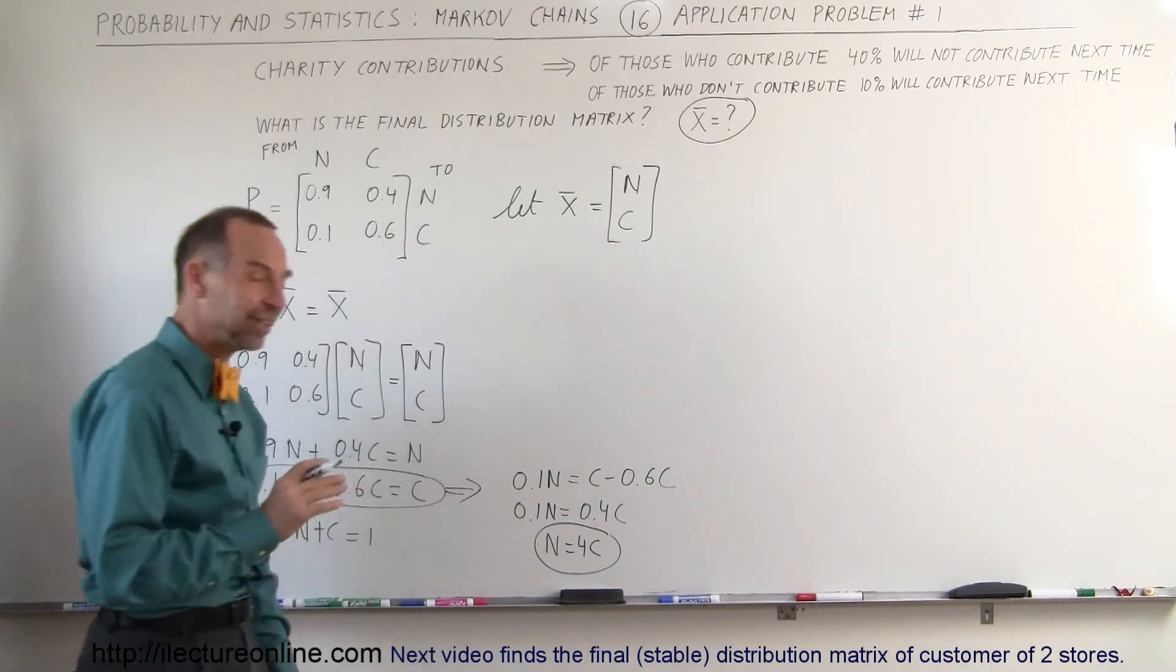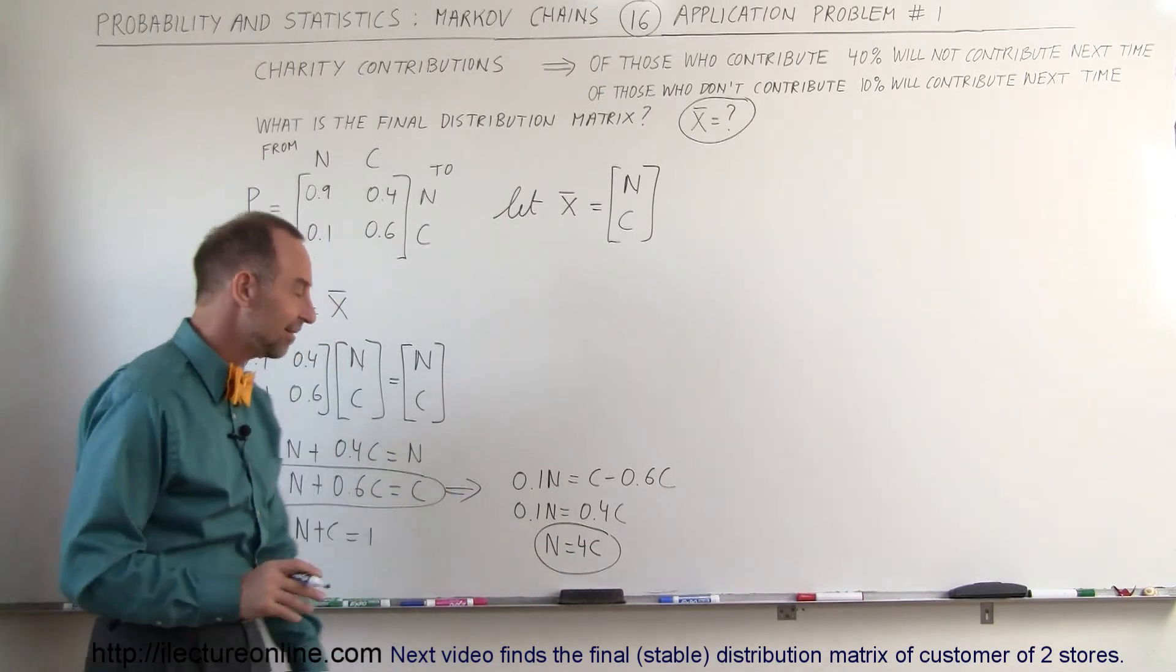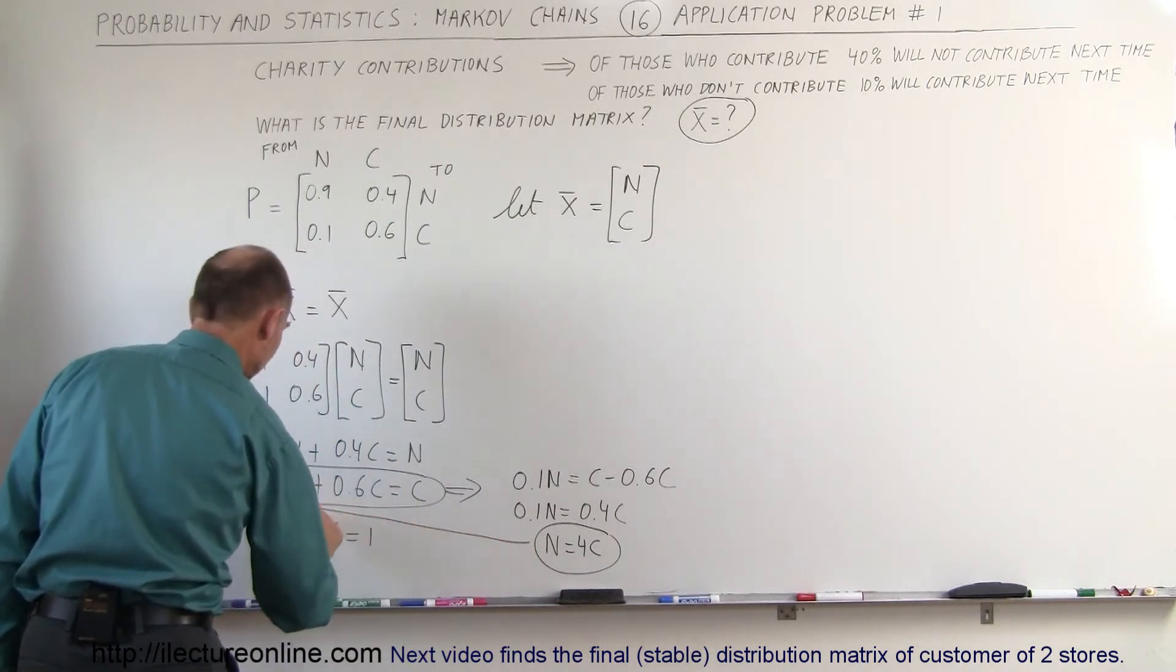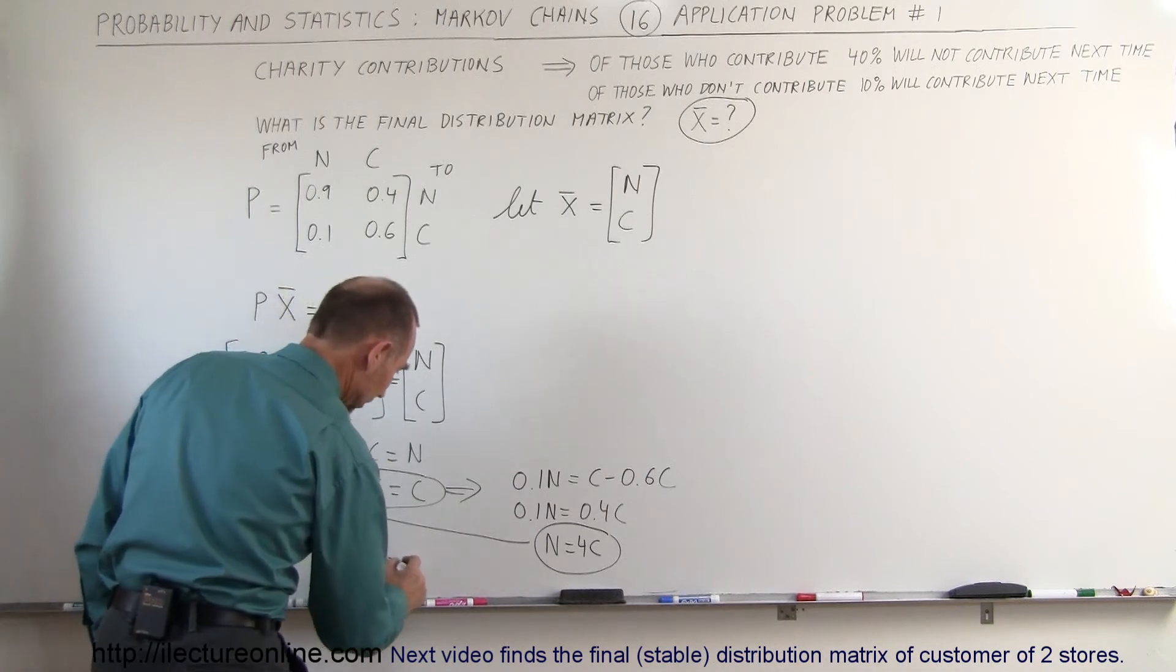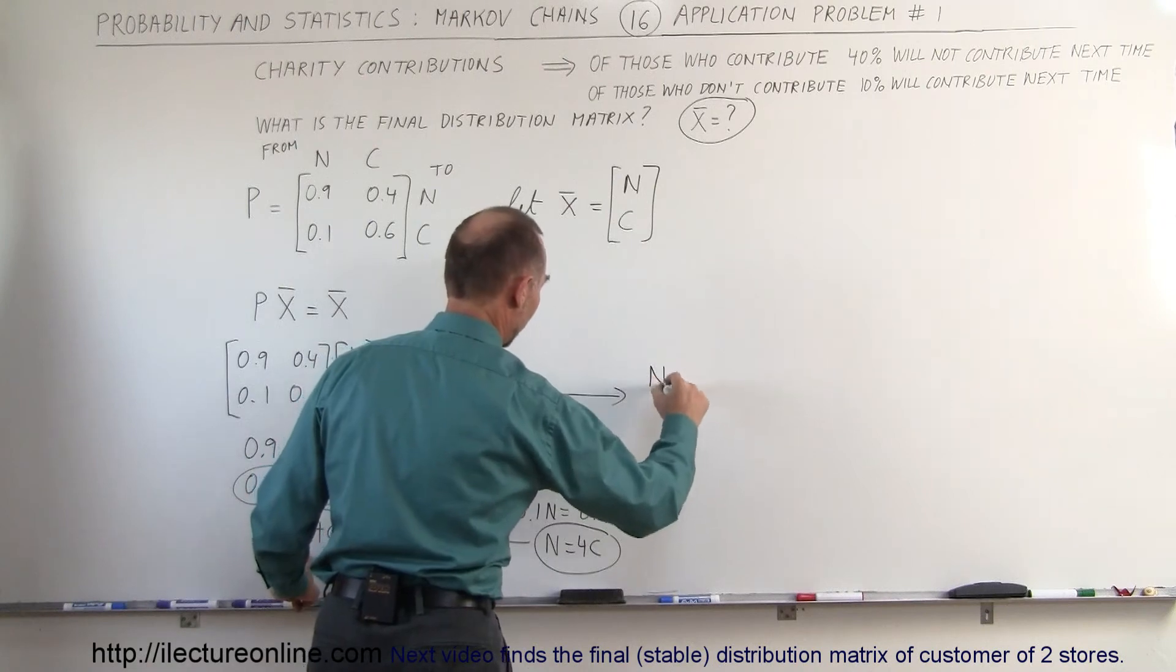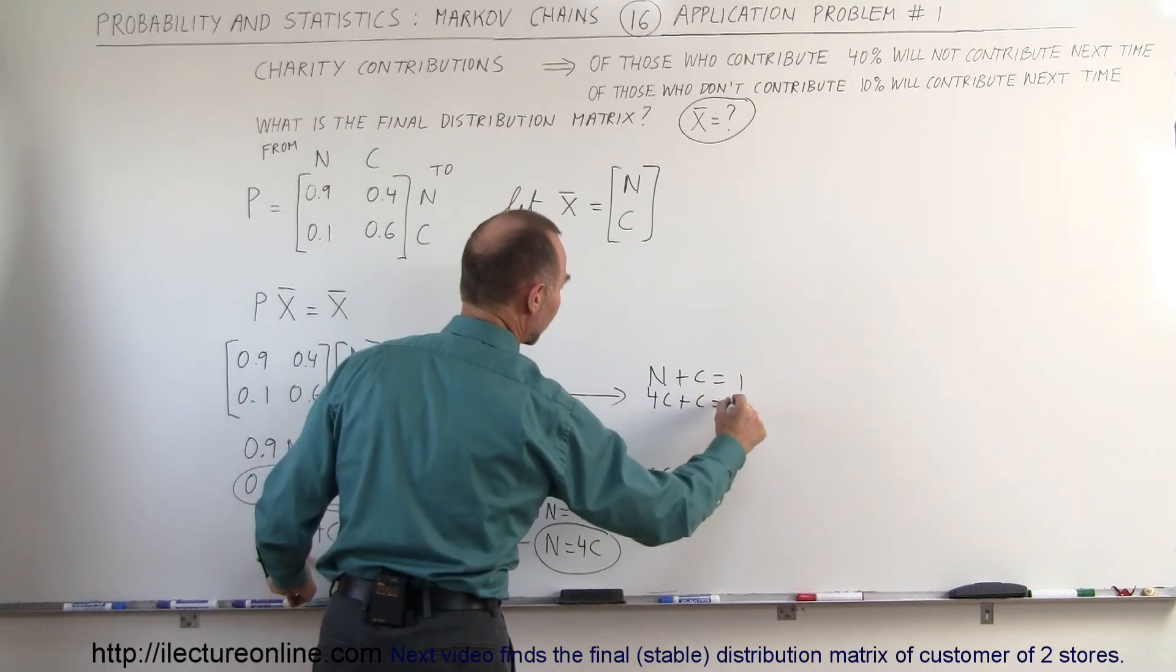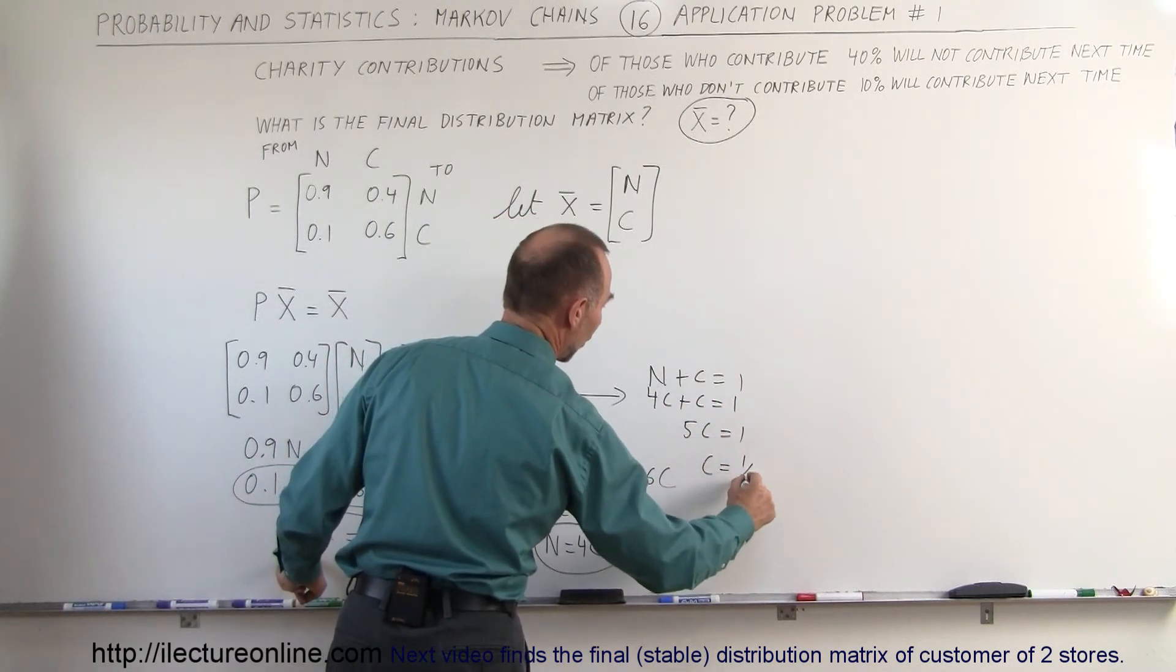So in the final stable matrix, we know that N will be 4 times as large as C. We also know that N plus C equals 1, so we're going to take that and replace the N in this equation by 4C. We have instead of N plus C equals 1, we're going to replace the N by the 4C, so 4C plus C equals 1, or 5C equals 1, or C equals 1 fifth.